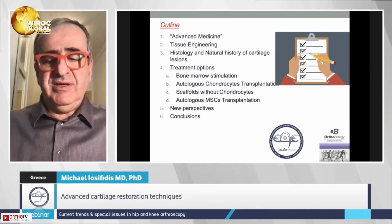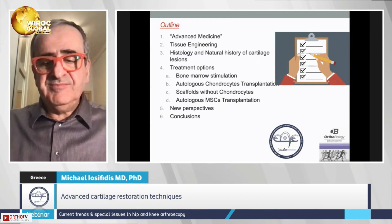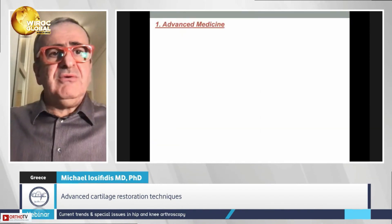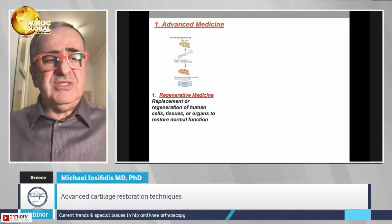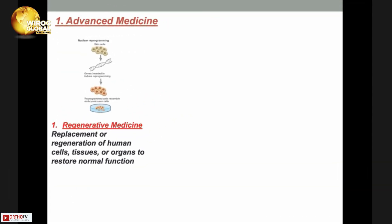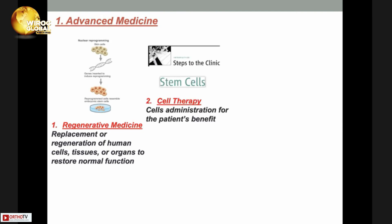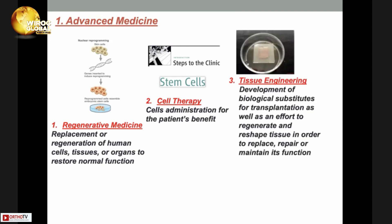When we talk about advanced medicine, we talk about regenerative medicine, which is the replacement or regeneration of human cells, tissues, or organs to restore the normal function of the human body. We also talk about cell therapy, which is the administration of cells for the patient's benefit.